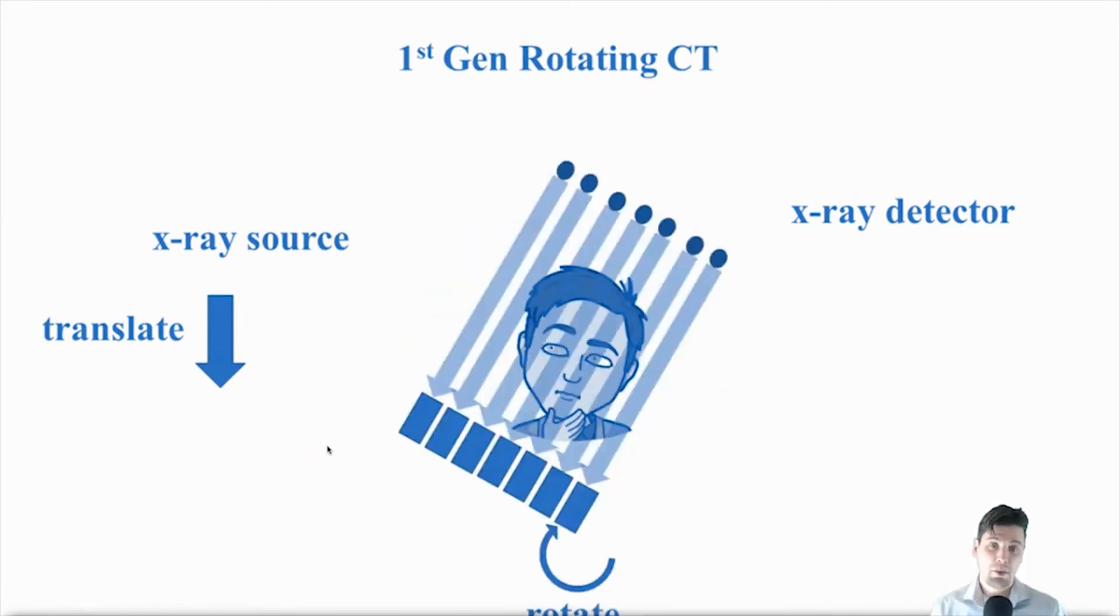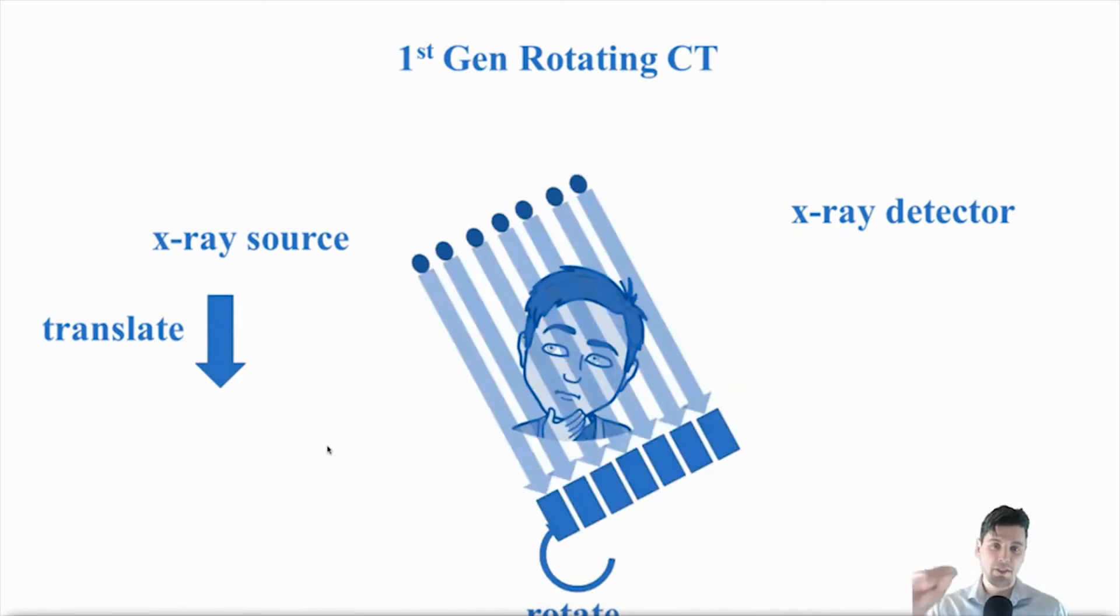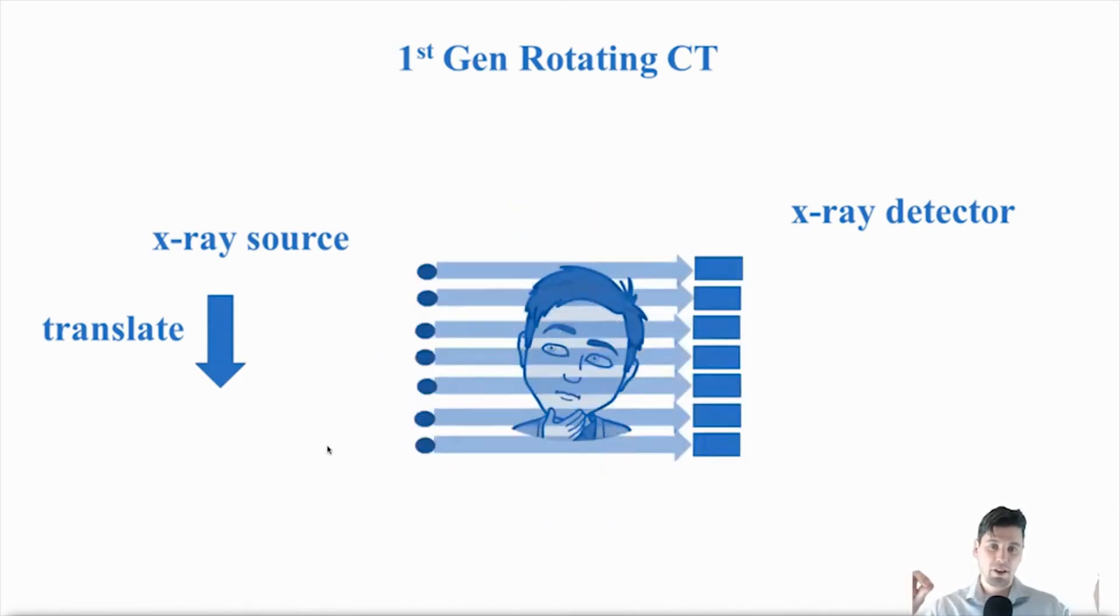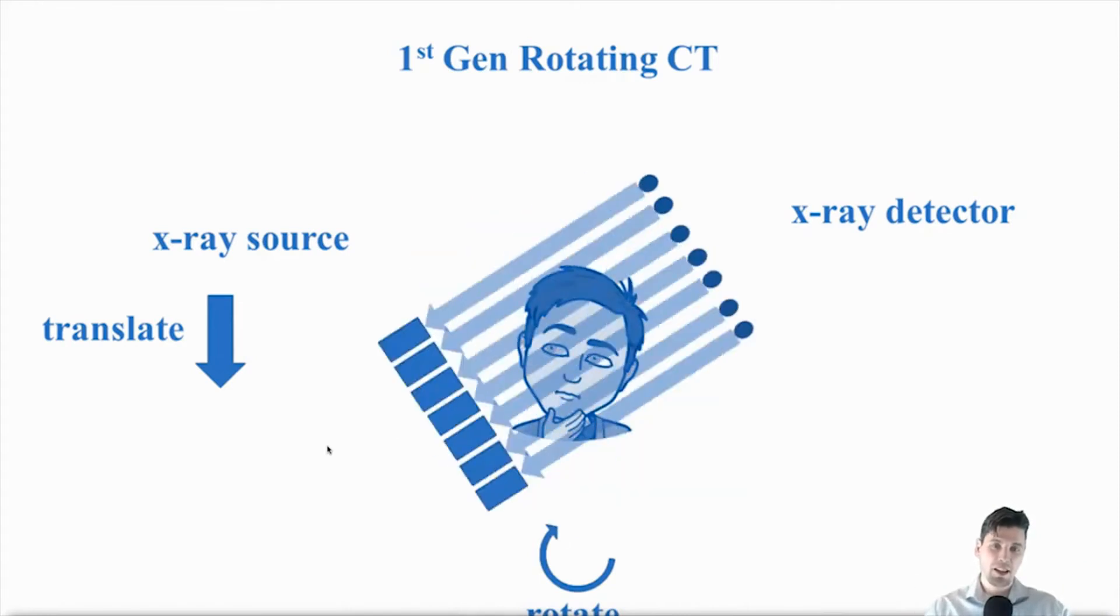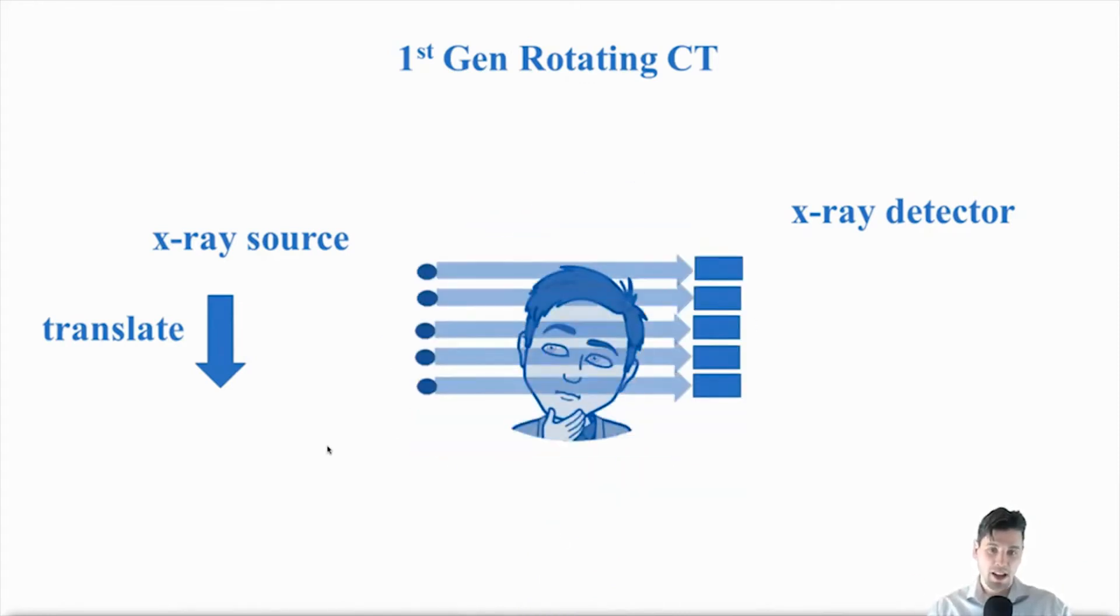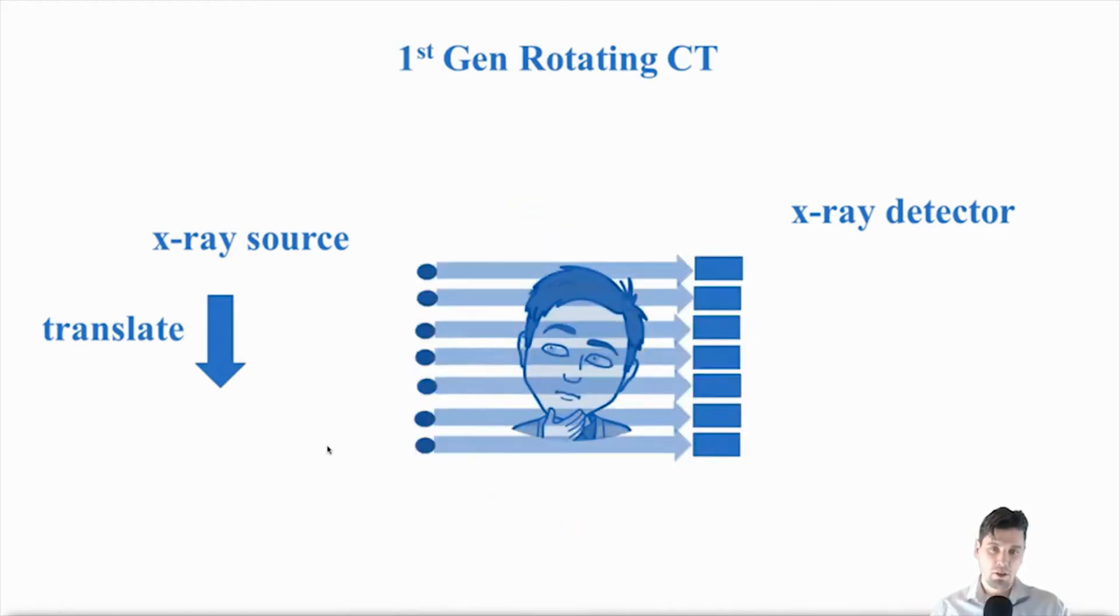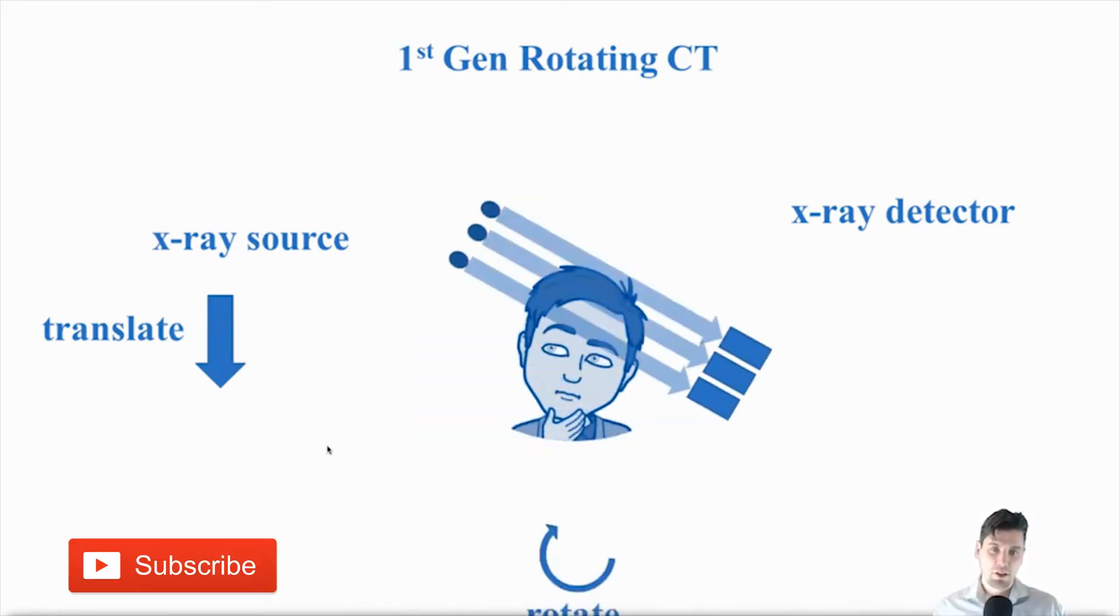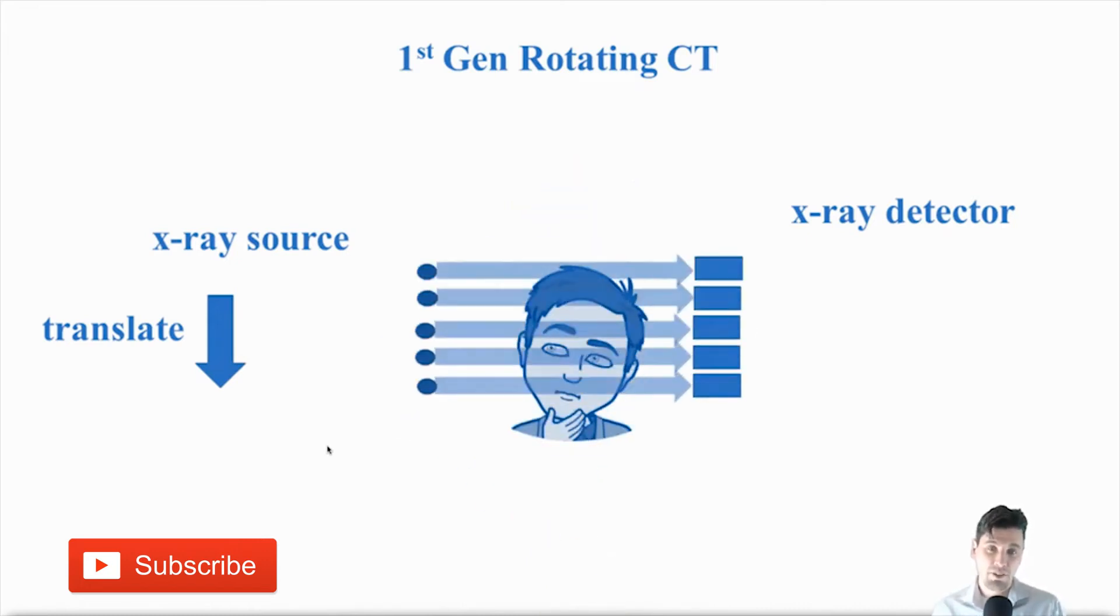So each time we wanted to acquire one view angle, we would have to have the x-ray source and the x-ray detector acquire one ray essentially through the object and then they would translate together. So the x-ray source again acquires one ray through the object, translates again one ray and keeps doing that and that would just give us one view.